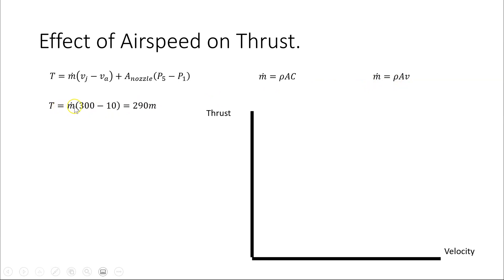So if I have an aircraft traveling at 10 meters per second, we'd have 300 minus 10 is 290, we'd have 290 times the mass of the airflow per thrust. If I increase the airspeed to 100, that 290 drops to 200. So 300 minus 100 is 200, so 200 times the mass. So you can see with an increase in airspeed, there might be a decrease in thrust.